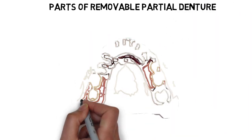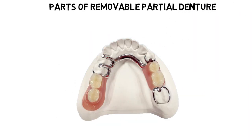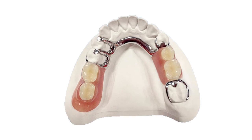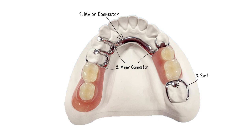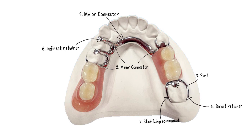The removable partial denture has in total eight different parts: the major connectors, the minor connectors, the rests, the direct retainers, the stabilizing components, the indirect retainers, the denture base, and the artificial teeth. Each of these parts has a specific function to perform and we will be briefly going through them.